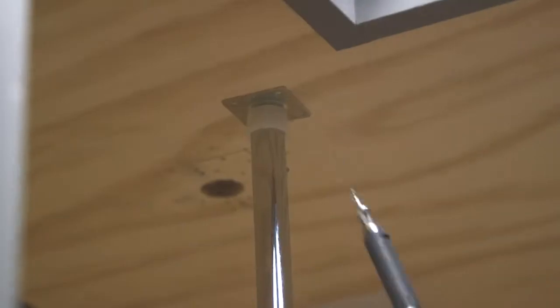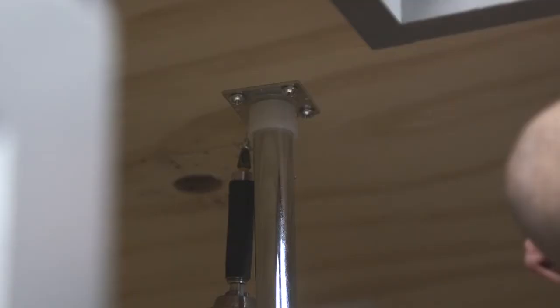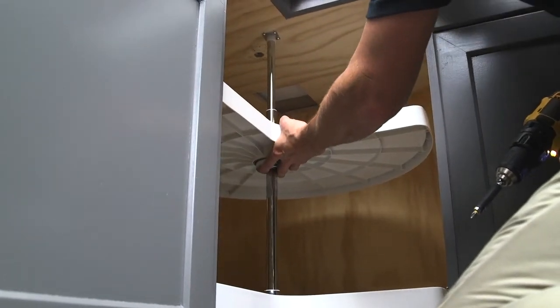Mount the upper mounting support with four number eight by five-eighths inch panhead wood screws that are provided. Determine upper shelf height, then holding the shelf support with one hand, tighten the set screw in the support.